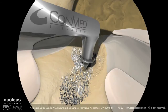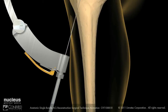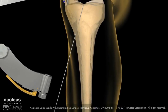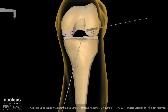Using the ConMed Linvotec M-Power 2 handpiece and pin driver attachment, advance the guide pin until it meets the point of the guide arm. Then depress the pin ACL drill guide lever to remove the sleeve. Remove the pin ACL guide from the guide pin and joint.